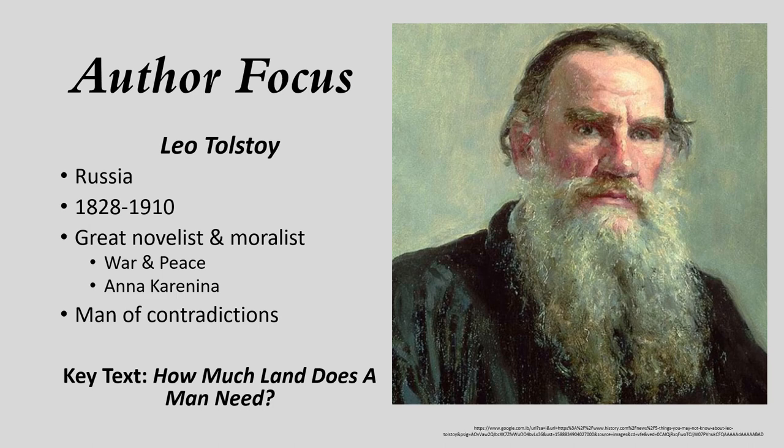He is also a man of many contradictions, and we see that in the way that his life tries to bring together two contradictory spheres: the sphere of growing up as a wealthy aristocrat, but also the sphere of someone who was a moralist and lived by very high moral standards, attempting to grapple with this throughout his life. We're going to see a lot of his life and his morals portrayed in our key text for this unit, How Much Land Does a Man Need?, written by Leo Tolstoy.